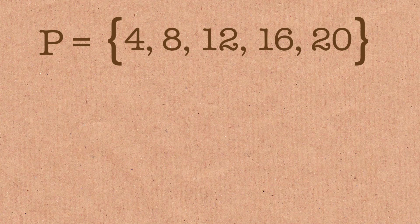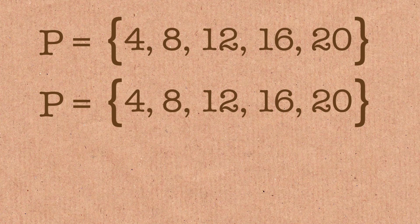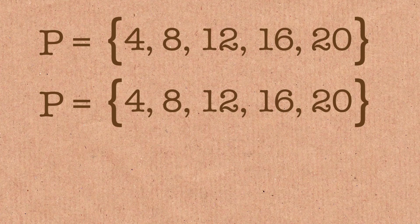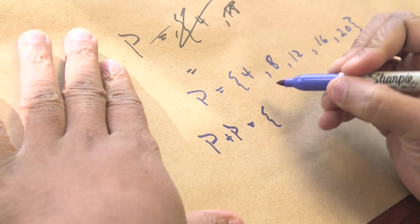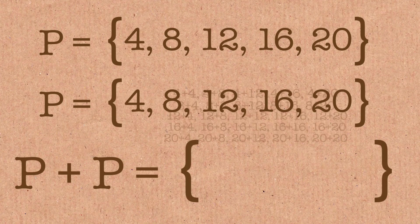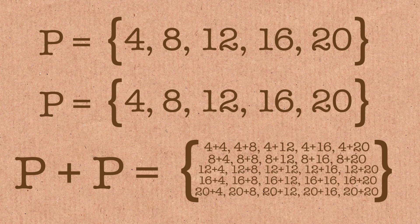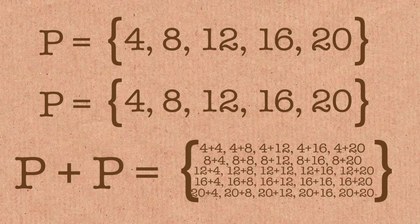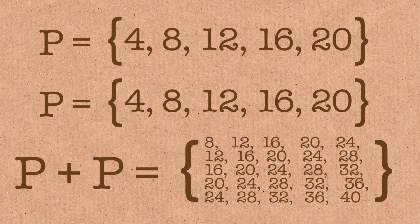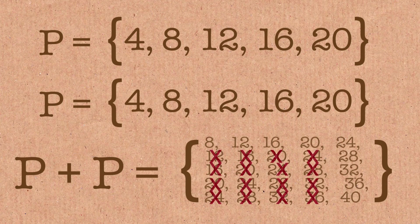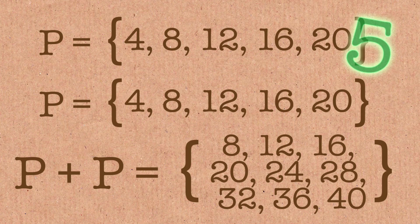What we'll do is we'll add P to itself and we'll see what happens and something kind of interesting happens. And so again we have 4 plus 4, 4 plus 8. We have this large set of sums here and in fact the actual set will be much smaller. 8, 12, 16, 36, and 40. That's the final set.